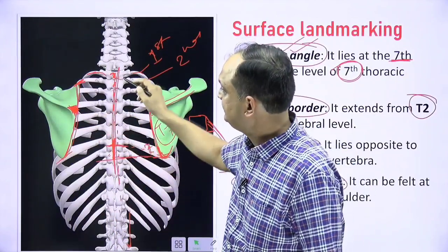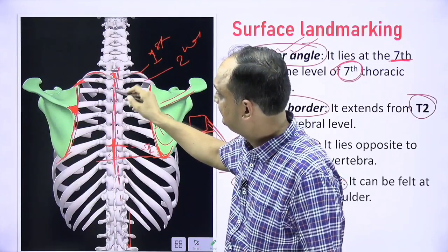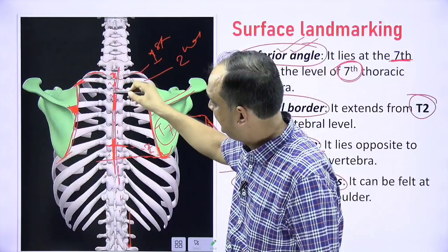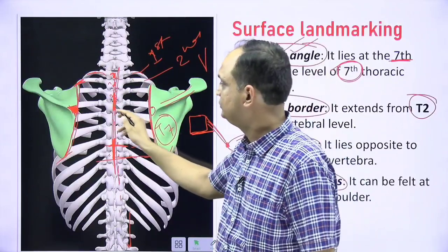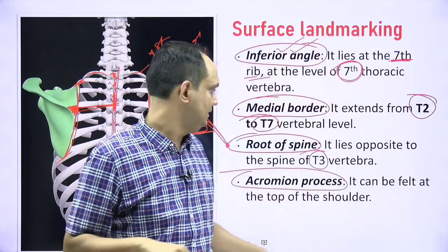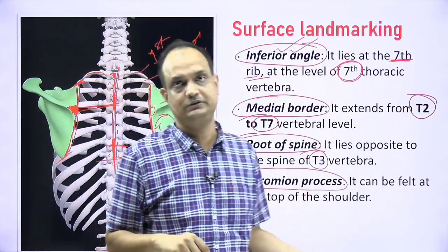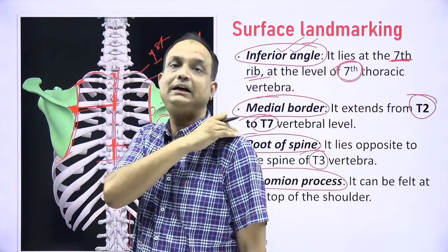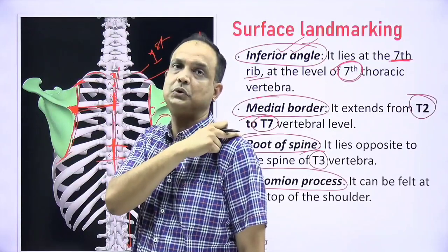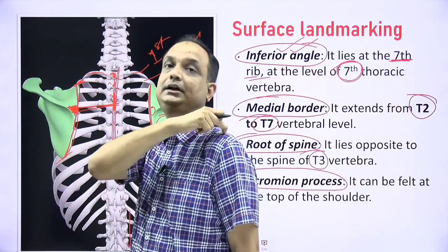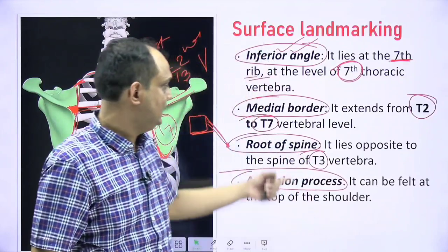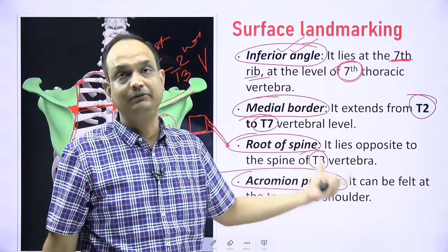Counting down: T1, T2, T3 — so this is the 3rd thoracic vertebra. The spines are longer than the vertebra, so what comes at this level is the T3 spine. Then the acromion process — this bony projection which you are able to feel on the top of your shoulder is the tip of the acromion process of the scapula. These are the important bony landmarks to keep in mind while examining the patient.